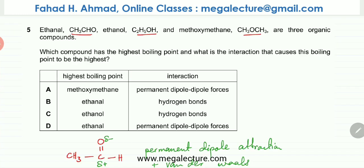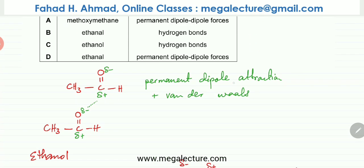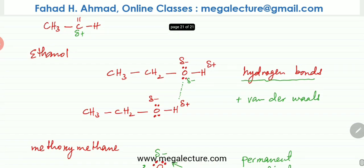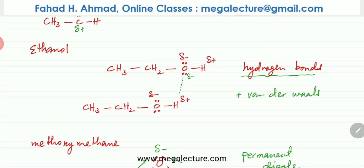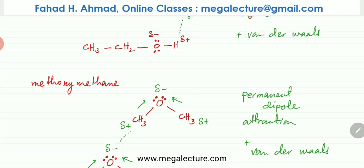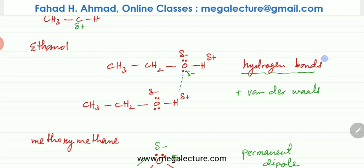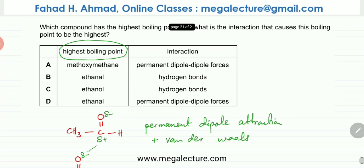In the question, we need to figure out which compound has the highest boiling point. Out of the three molecules: permanent dipole attraction in ethanal, hydrogen bonding in ethanol, and permanent dipole in methoxymethane — hydrogen bonding is the strongest intermolecular force. So ethanol is going to have the highest boiling point. The reason is hydrogen bonds, because ethanol is capable of forming very strong hydrogen bonds compared to permanent dipole and Van der Waals forces. So option C is the correct answer.